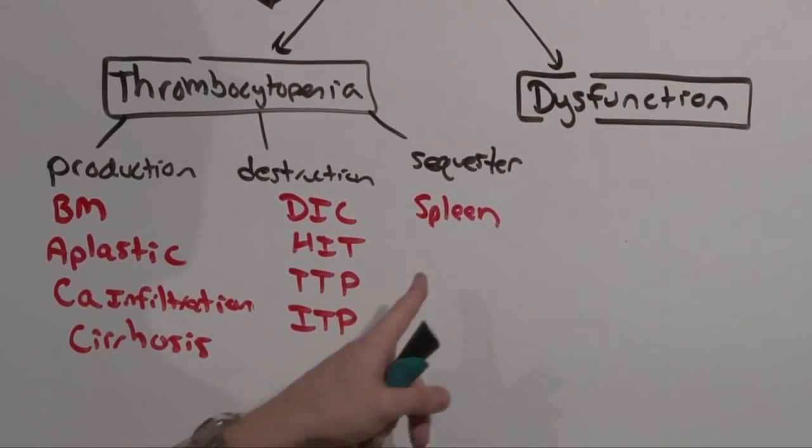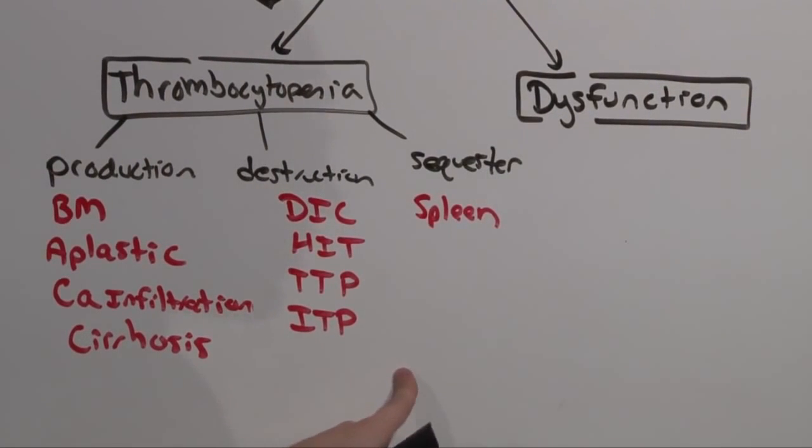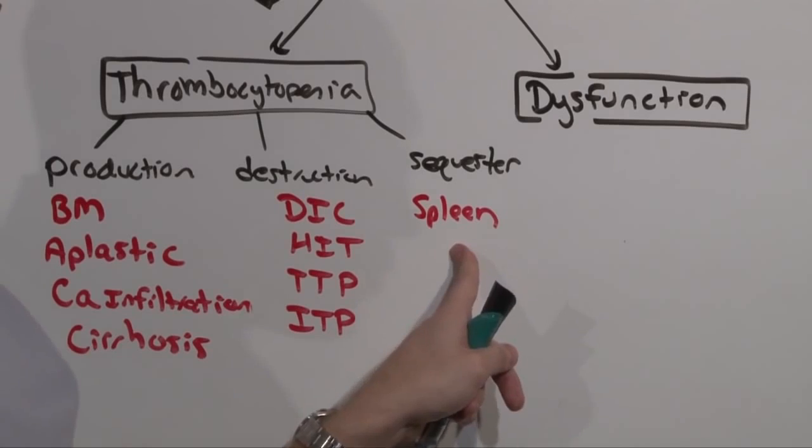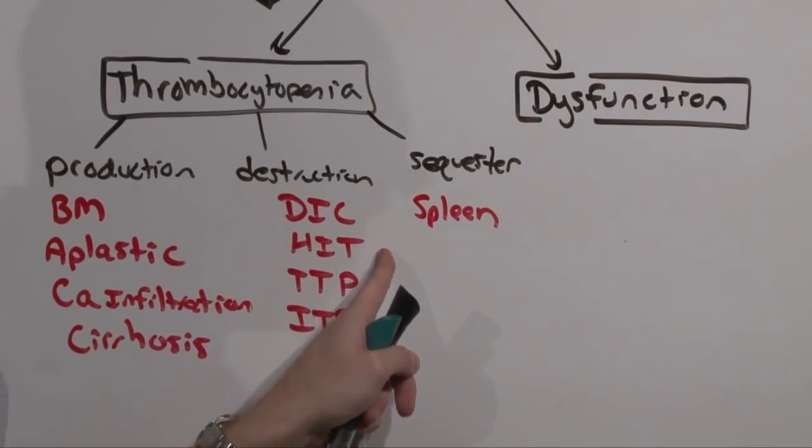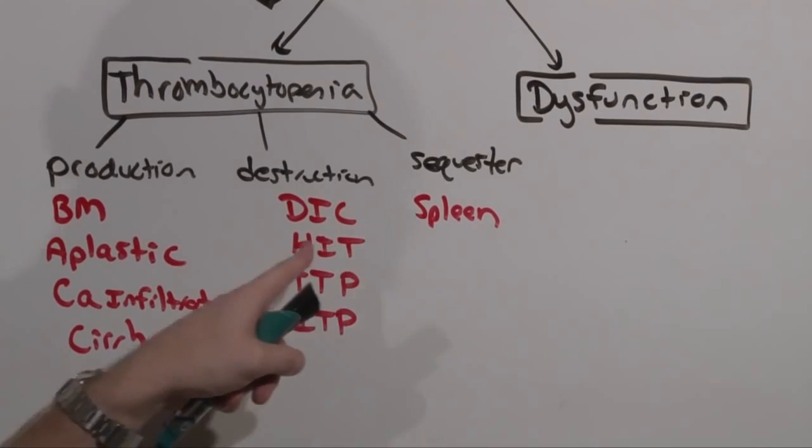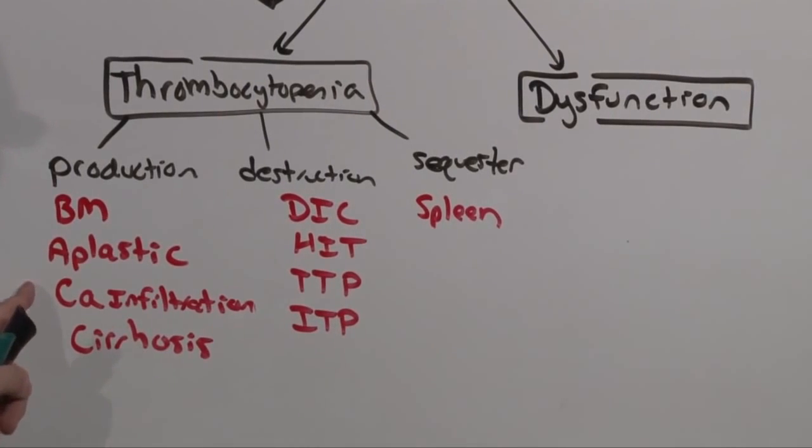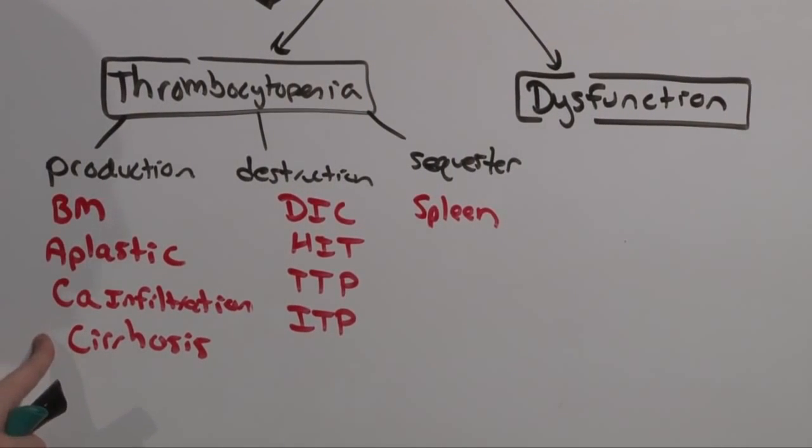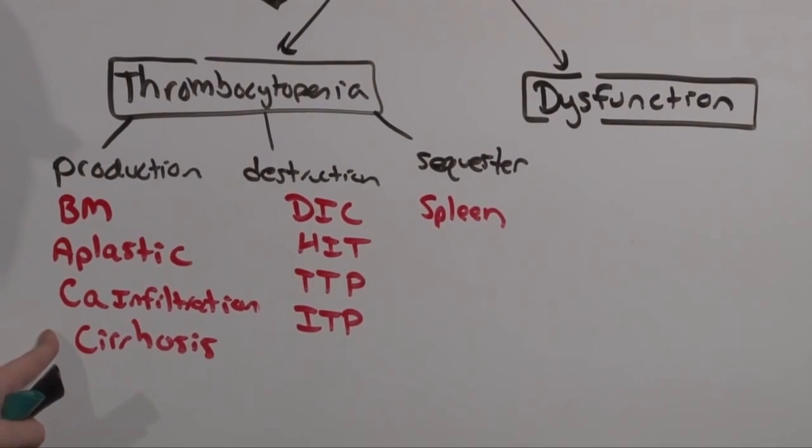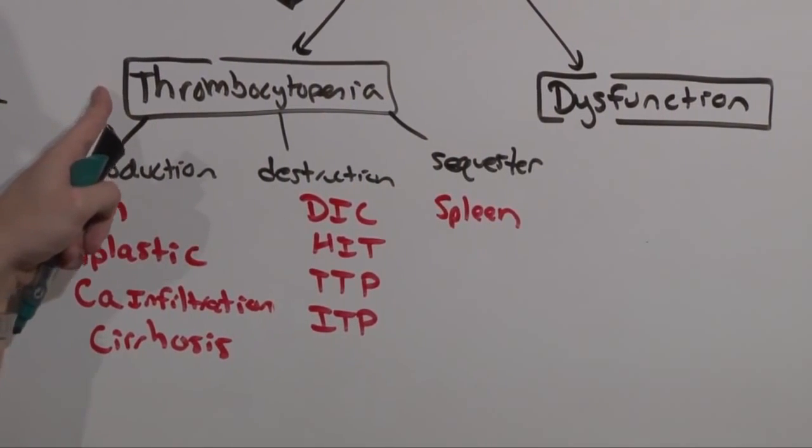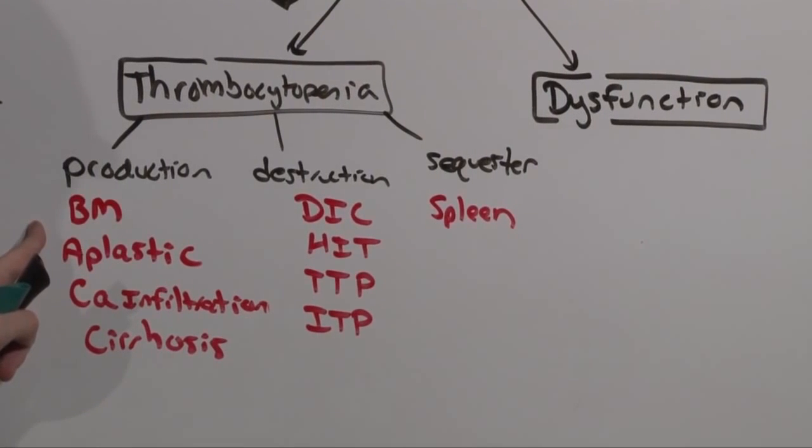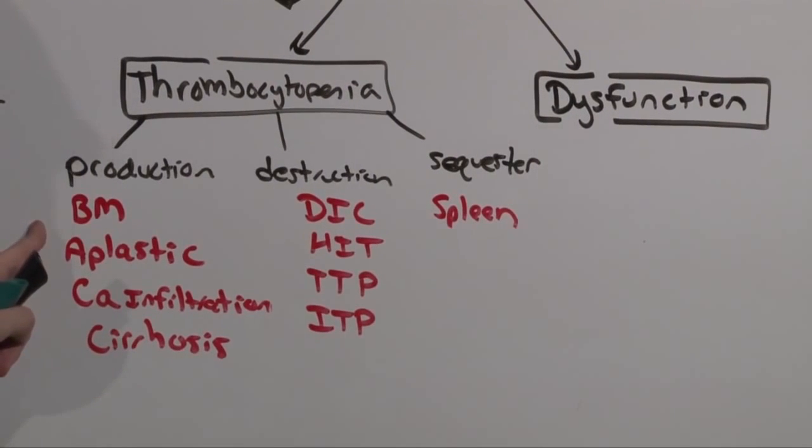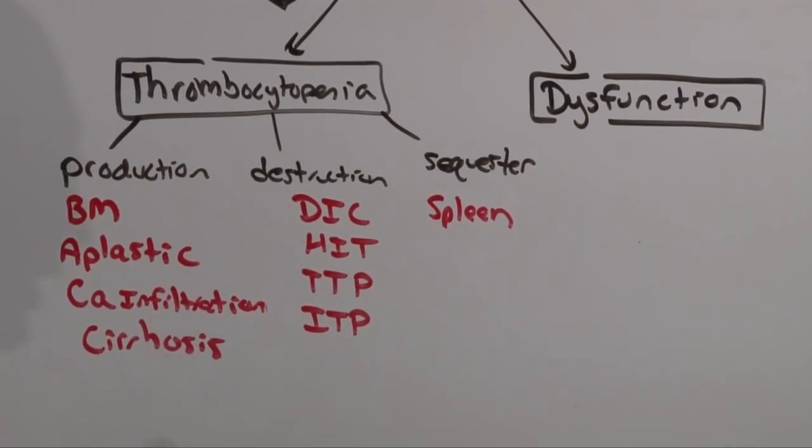Obviously what you do to evaluate each one of these is different. Spleen, get an ultrasound or see if you can feel it. Destruction, we'll talk about in the next lecture. And if you've ruled out these disorders, now you're into a production issue. So unless you saw the cirrhotic and confirmed that they have cirrhosis leading to the thrombocytopenia, you're probably going to go after a bone marrow biopsy. You got all of that from the type of bleeding and the platelet count.